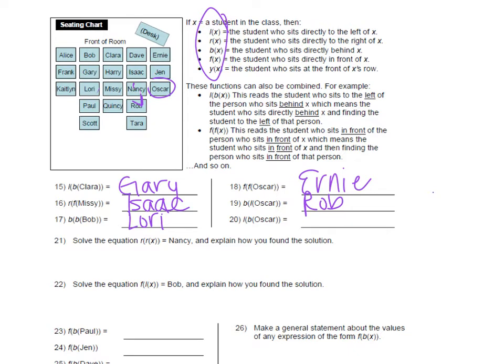Okay, then last one — we're starting with Oscar again. We need to go behind Oscar, but there's nobody behind him. So since there's nobody behind him, we can't go to the left of them, so this one's actually going to be undefined. Since there's nobody behind Oscar, you have to stop there, which would be undefined. That one's a little bit tricky. If you got those, you can get a ticket.